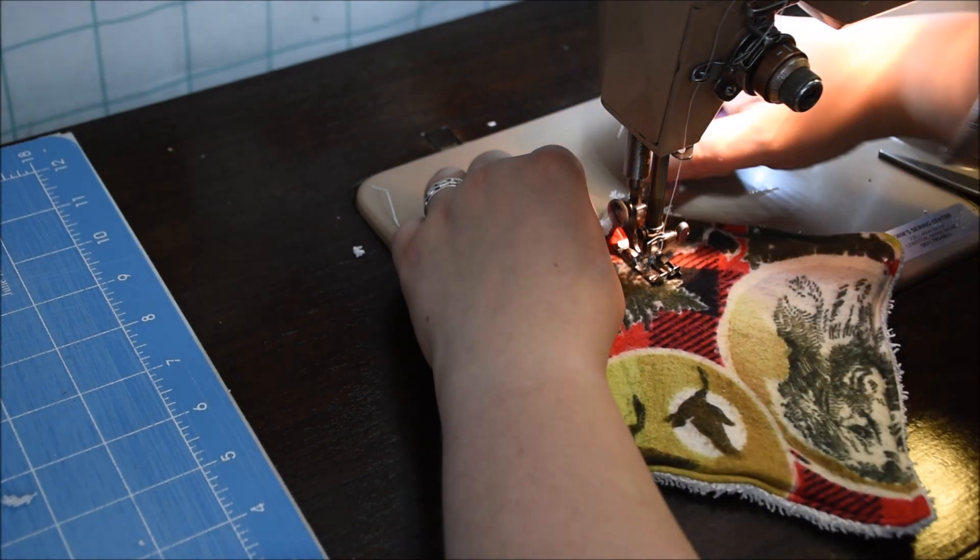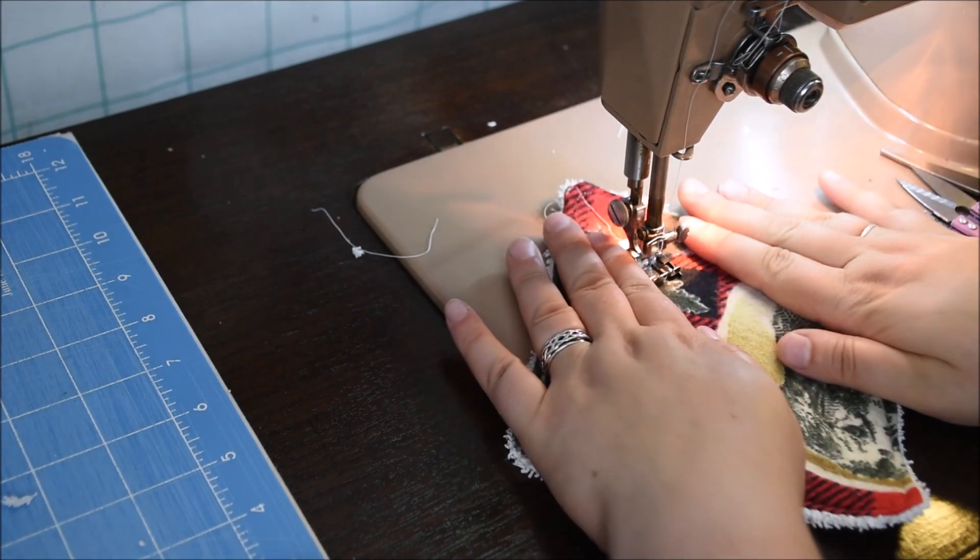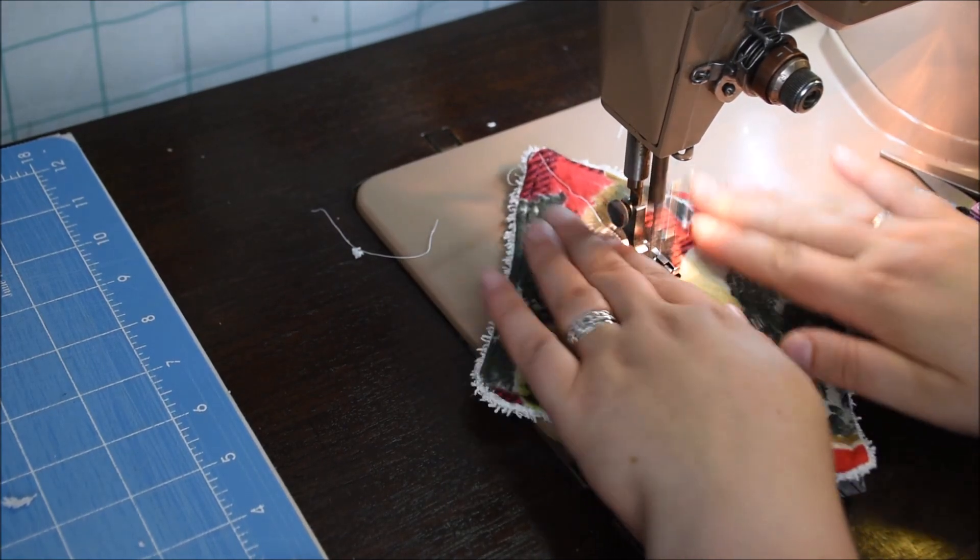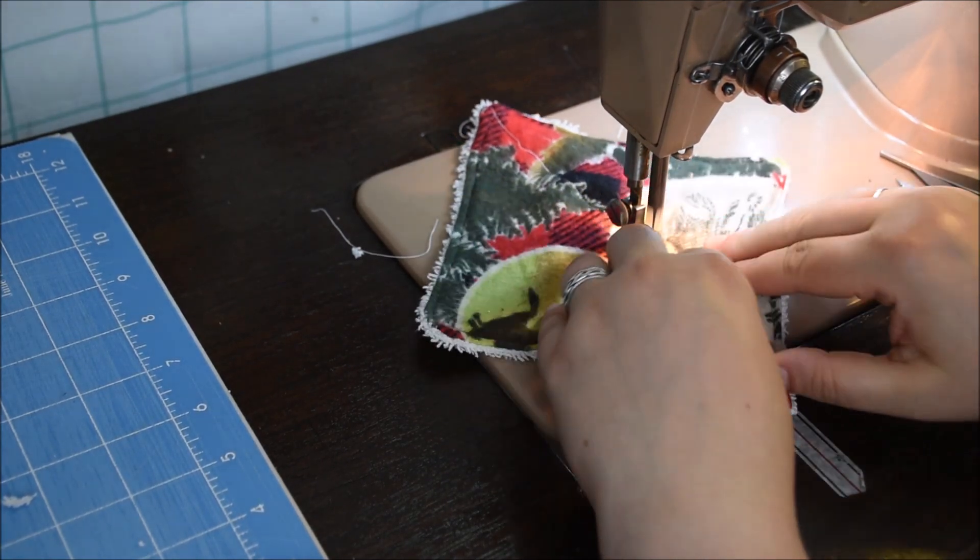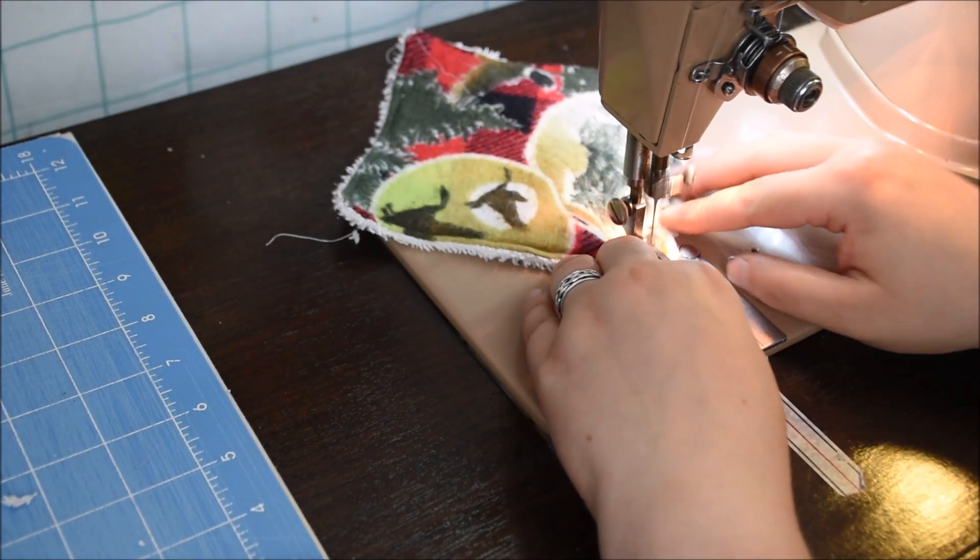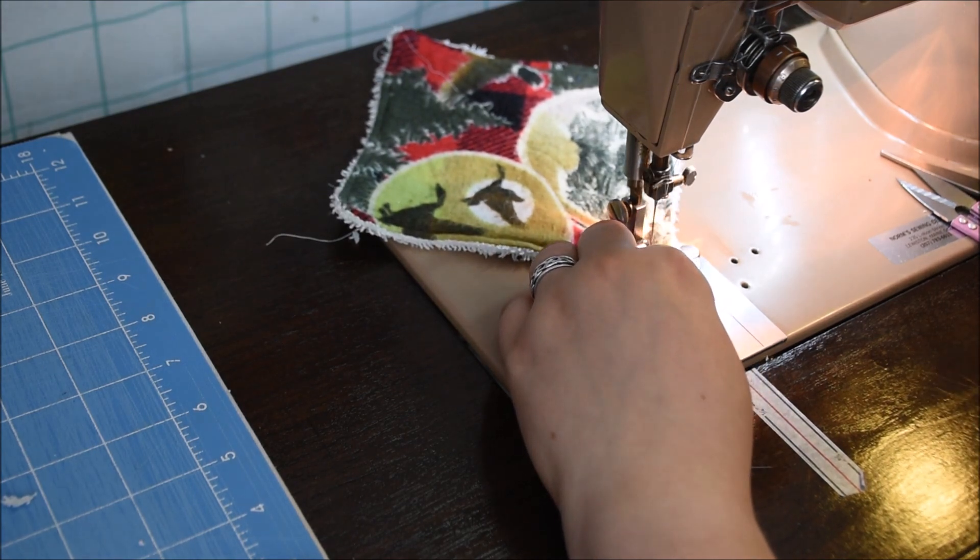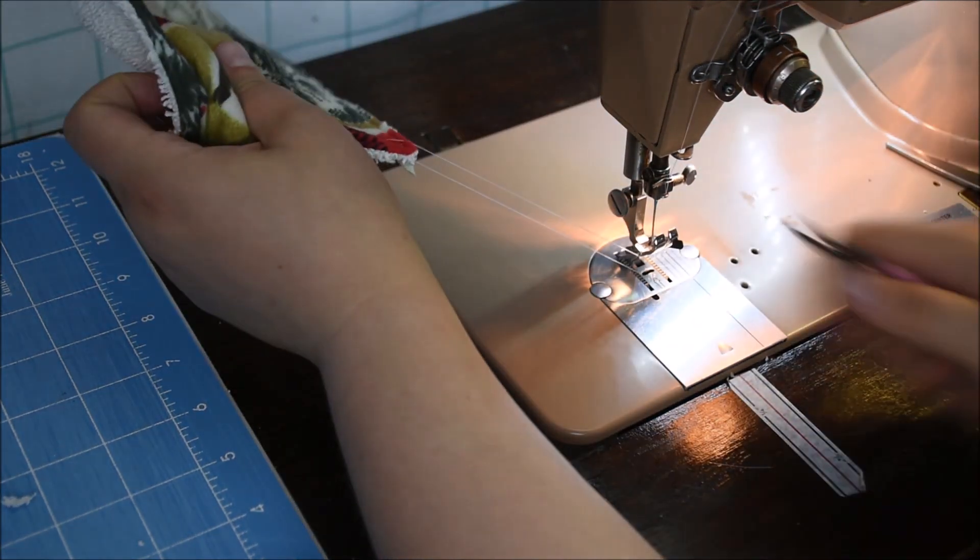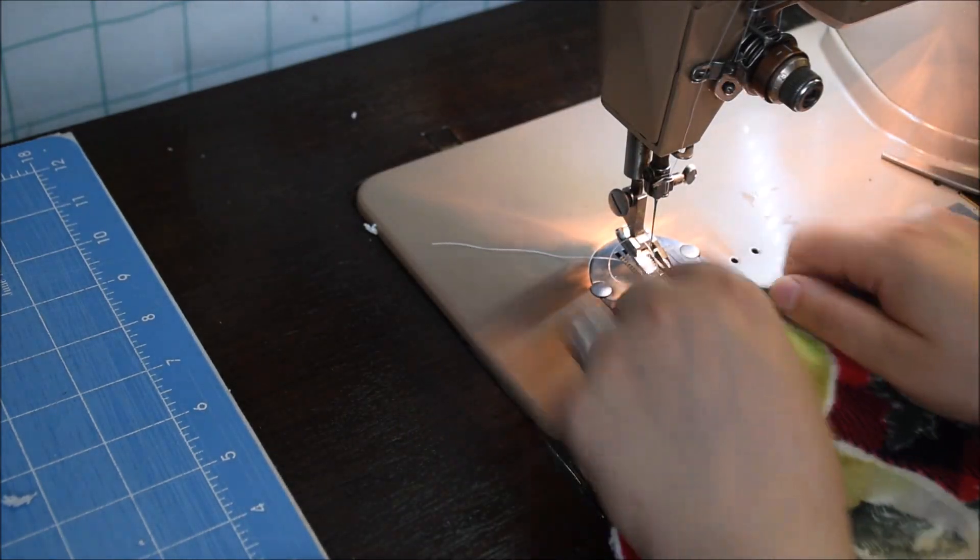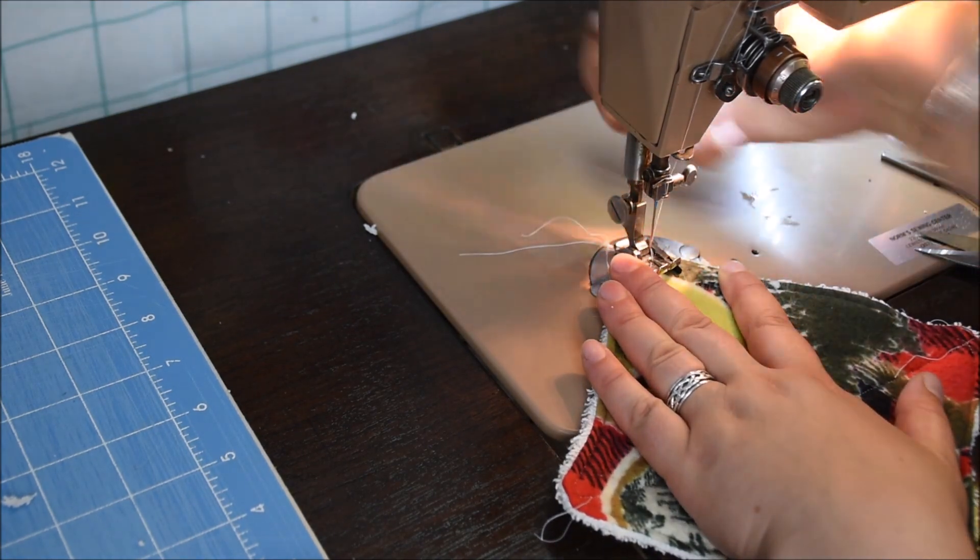Next we're going to do a straight stitch X across the piece of work. Again, this is to keep those layers together and stop them shifting too much. I'm going to do a back stitch for a couple of stitches and then we're just going to straight stitch. I'm eyeballing this, just going corner to corner here, and I'm going to do a back stitch when I get to the end. Pull out the work and then I'm going to go to the other corner and do the same thing.